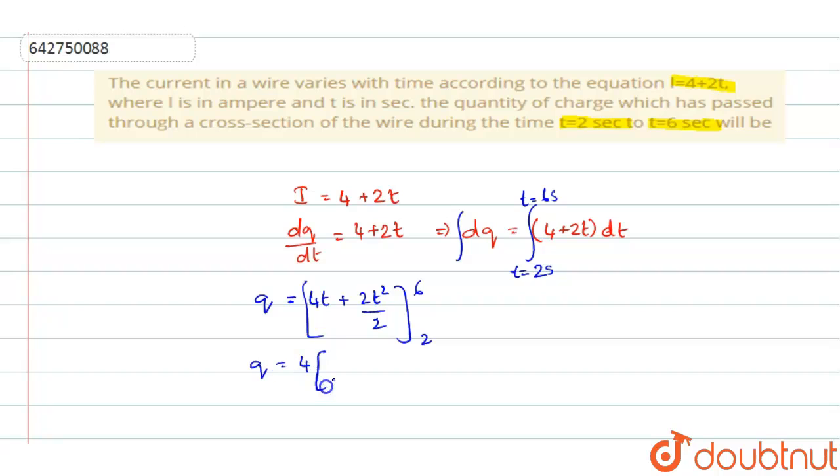On application of limits you will get 4 into, your upper limit minus lower limit we shall substitute. So, 4 into (6 - 2) plus 2 gets cancelled here, and 36 - 4, and when you simplify this, 6 minus 2 is 4.